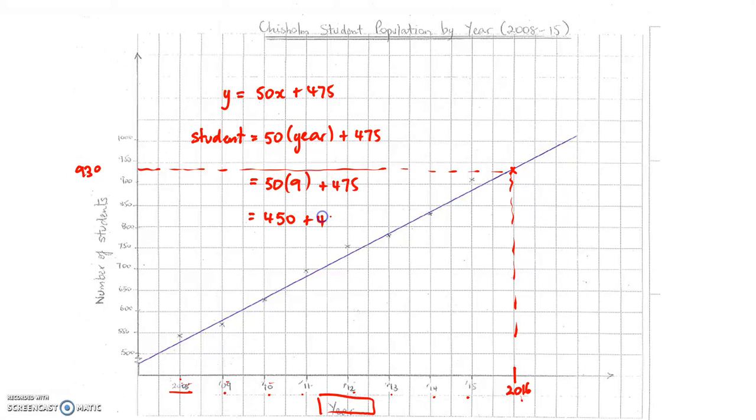In fact we would expect 925 students to be present in 2016. Now this is an estimate and it's an estimate based on our model which is linear. You'll notice that the points themselves do not align exactly with the lines. So what we have is an estimate.